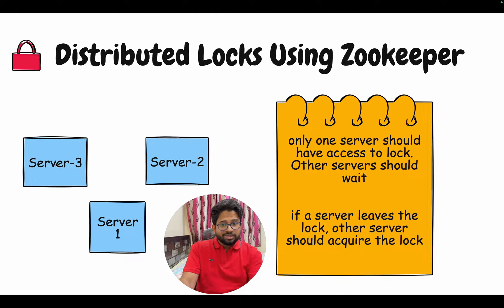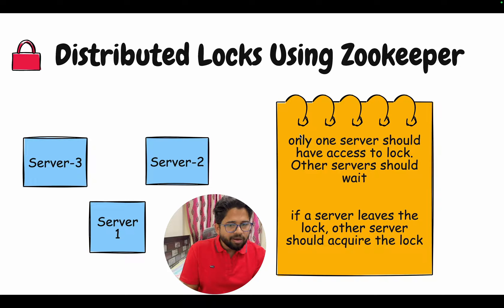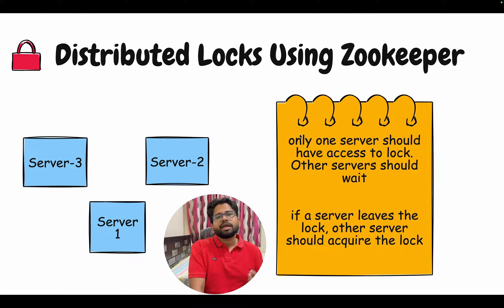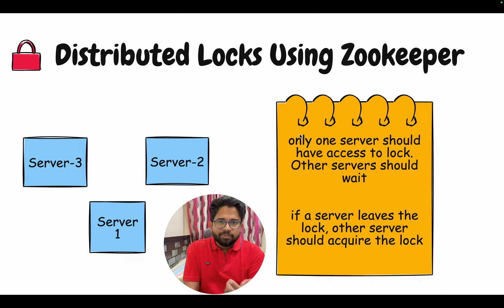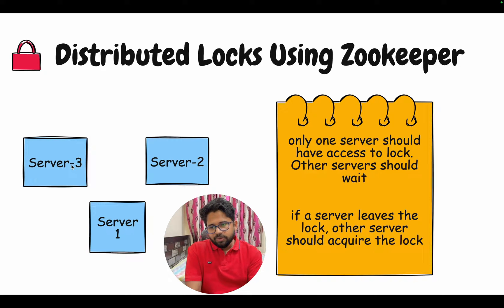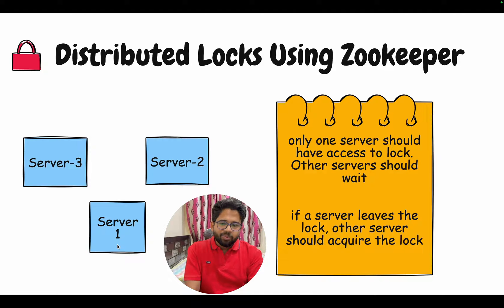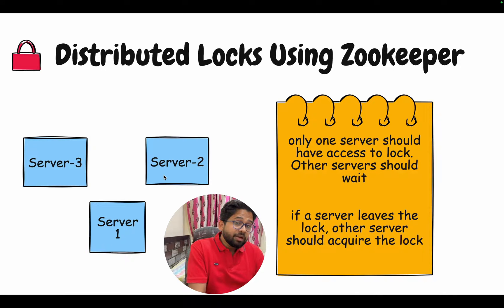I have three servers here — server 1, server 2 and server 3. The clear-cut requirement is that only one server should have access to the lock and the other servers should wait. I am taking the option of waiting; you can choose not to wait and just end your attempt, but I am also implementing the concept of waiting. If a server releases a lock, the other server should acquire it. So if servers 1, 2 and 3 all try to get the lock, server 1 gets it first, then server 2 or 3 waits, and eventually server 3 gets the lock.